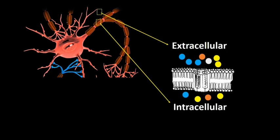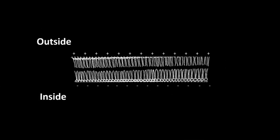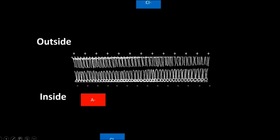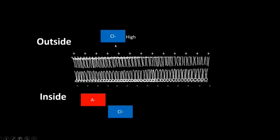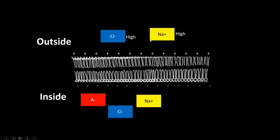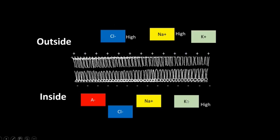There are several important ions in both the intracellular and extracellular fluids. Organic anions, which may be proteins and intermediate products of the cell's metabolic processes, are negatively charged and found only in the intracellular fluid. Chloride ions are also negatively charged and are found in both fluids but are predominant in the extracellular fluid. The positive ions — potassium and sodium — are found in both fluids, but potassium ions are found predominantly in the intracellular fluid while sodium ions are found predominantly in the extracellular fluid.